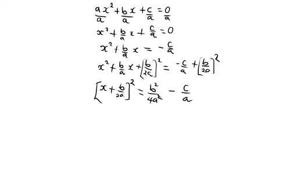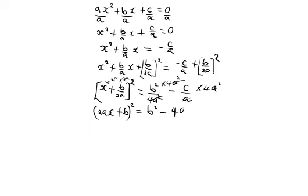This gives us the expression x plus b over 2a, all squared, equal to b squared over 4a squared minus c over a. On the left-hand side, we make the bracket linear by multiplying through by 2a, so inside the bracket we have 2ax plus b, all squared. On the right-hand side, we multiply by the LCM which is 4a squared, leaving us with b squared minus 4ac.